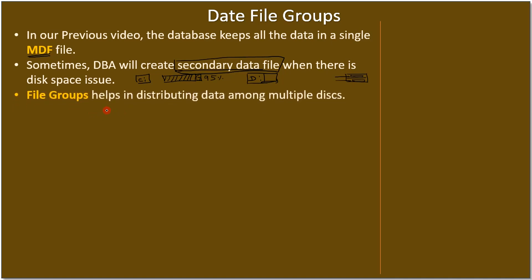File groups help in distributing data among multiple disks. You can create multiple secondary data files, and these can be kept in one group, while other files go in a different group. Based on these groups, data can be distributed across different drives — G1 and G2, for example — where the disk quota for G1 and G2 may be different, so they sit on different drives.